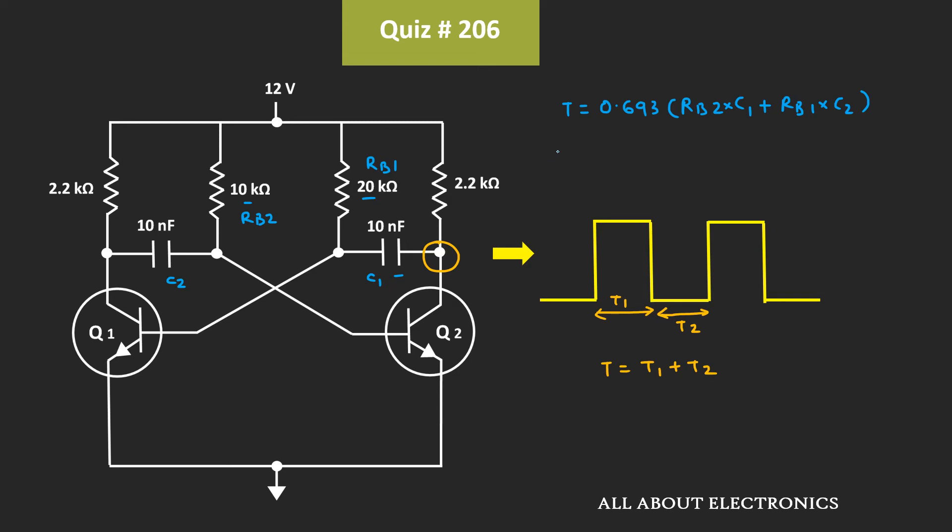So from this we can say that the total time period T is equal to 0.693 times 10 kOhm plus 20 kOhm times 10 nF. And if we calculate the value, then this total time period T is roughly equal to 0.208 ms.